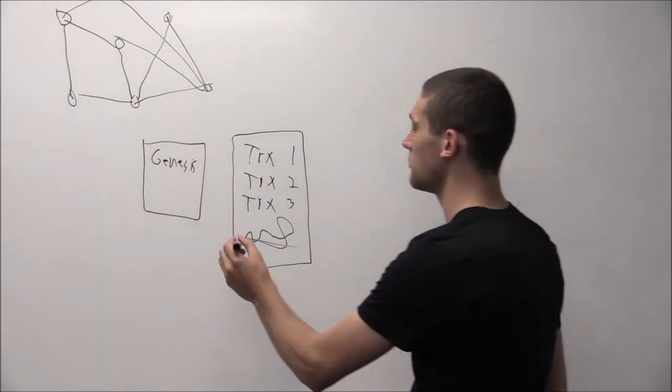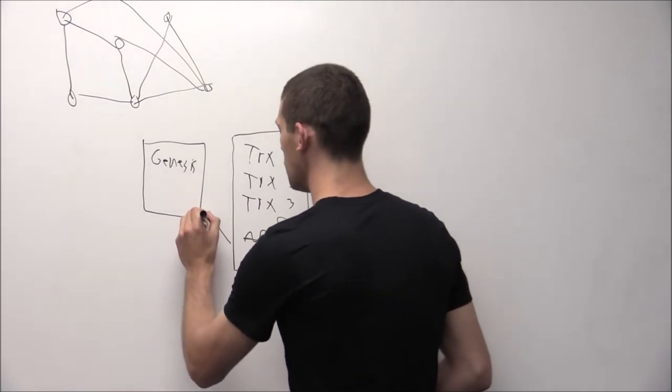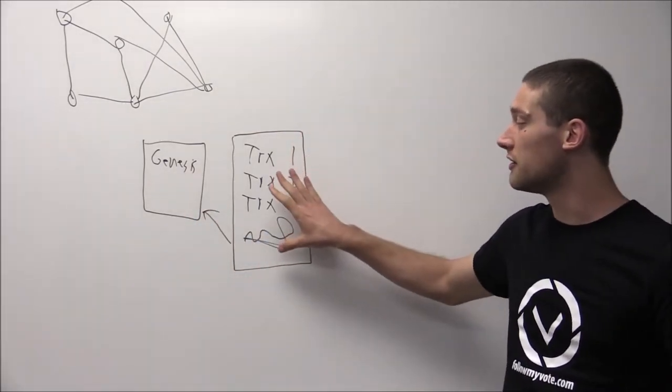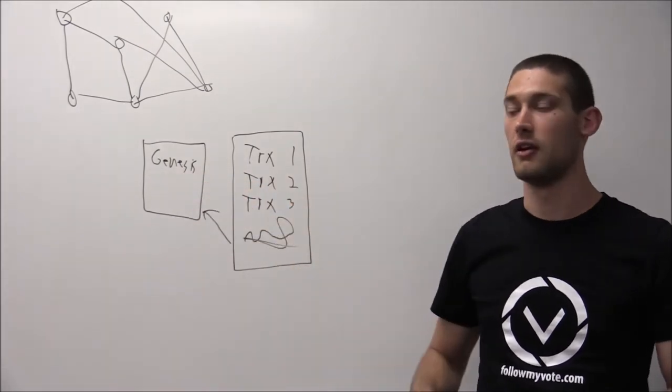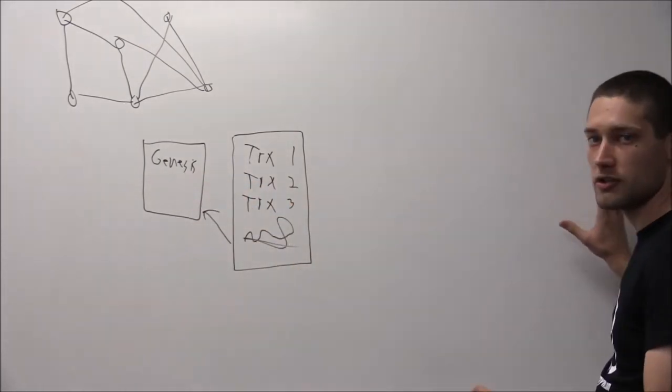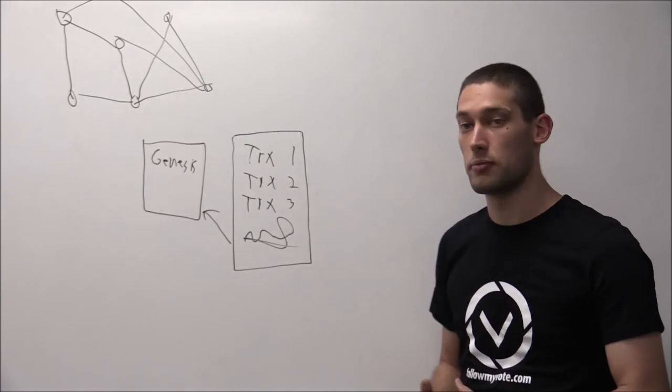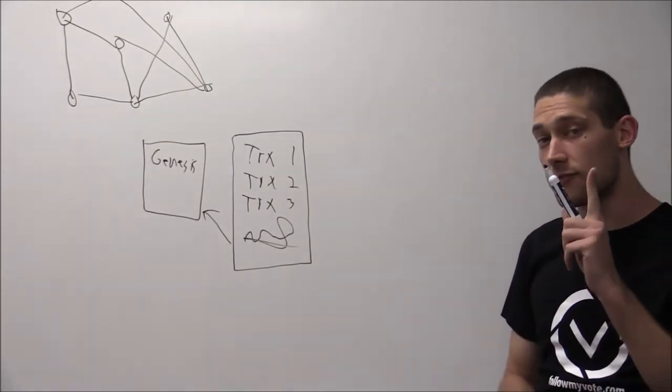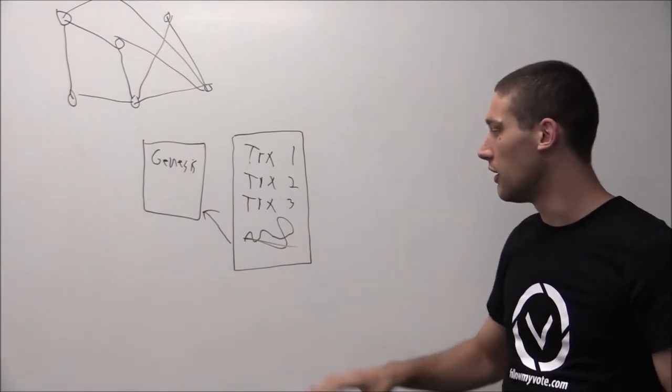the signature establishes a link to the previous block. Now in the first block, this is a link to the Genesis state. In all subsequent blocks, it will be the link to the block that preceded it. So that's the first important property of these signatures.